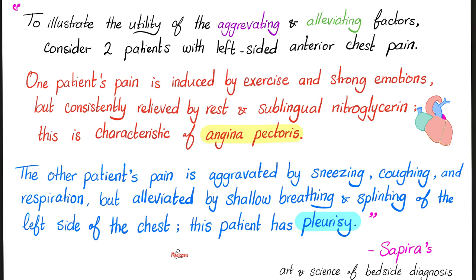That's why the history is so important. To illustrate the utility of aggravating and alleviating factors, consider two patients with left-sided anterior chest pain. One patient's pain is induced by exercise and strong emotions, but consistently relieved by rest and sublingual nitroglycerin — this is characteristic of angina pectoris. The other patient's pain is aggravated by sneezing, coughing, and respiration, but alleviated by shallow breathing and splinting of the left side of the chest — this patient has pleurisy.